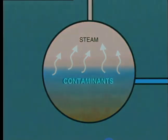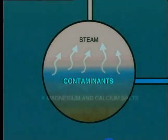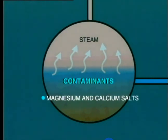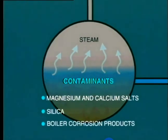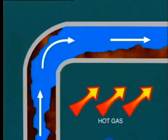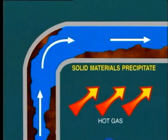Generally speaking, the contaminants consist of magnesium and calcium salts, which are dissolved in the water and contribute to hardness, silica, the products of corrosion of the boiler itself and the feed water system — mainly iron and copper. At high temperatures such as encountered in boiler water, and above a certain concentration, these solid materials precipitate out of solution and deposit on the inside of the tube wall.